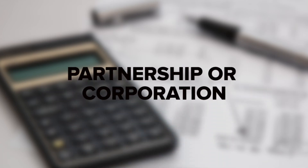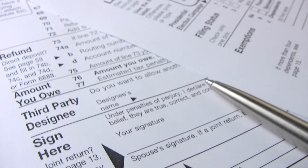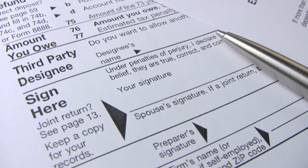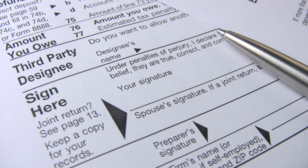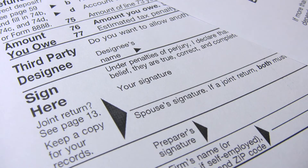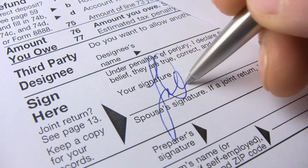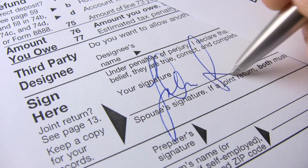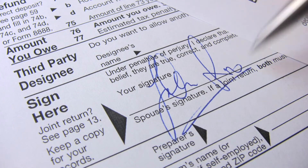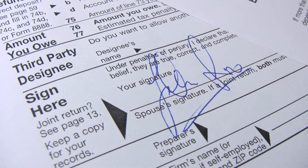Partnership or Corporation: if you're a partnership or corporation, reporting 1099 income is different — the income isn't reported on your personal tax return. Thankfully, it's not much more complicated. Instead of filing it under your personal income tax, you include it in the income total of your business tax return.